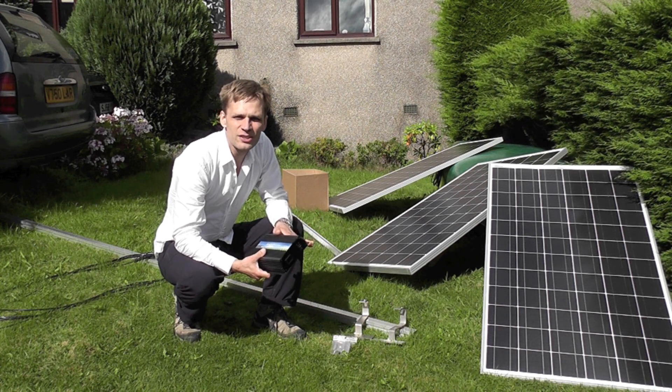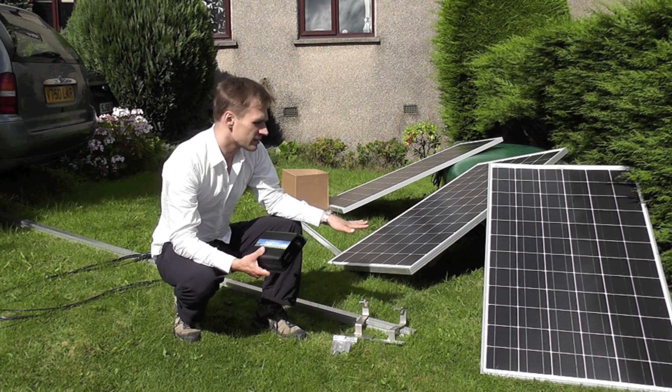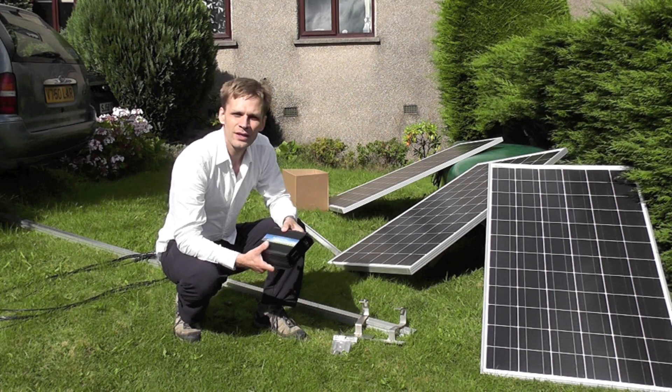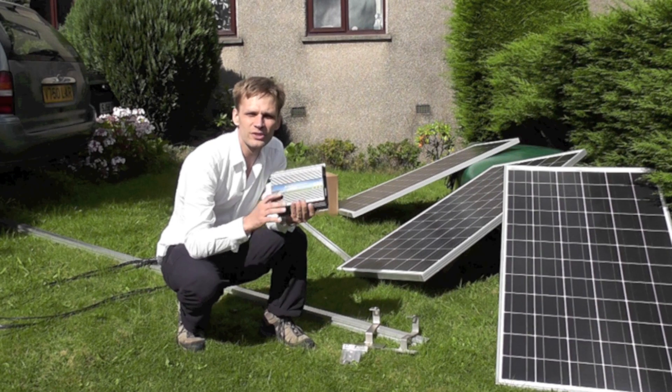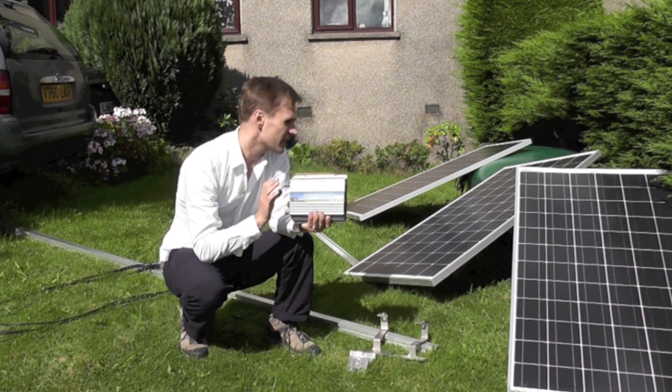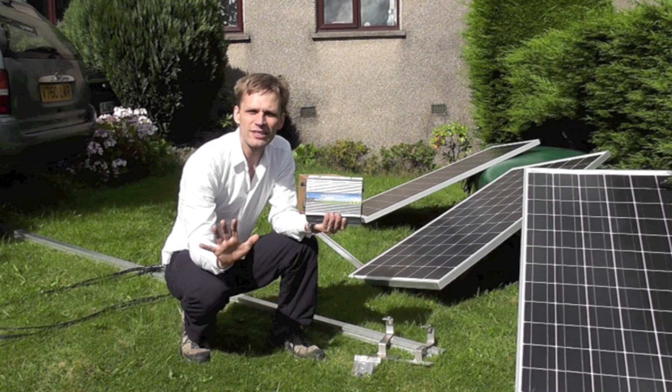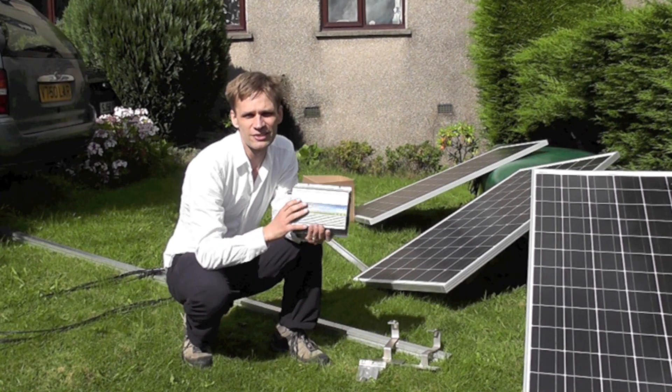We're going to put a grid tie system in place here. These panels here will go up on the roof and then we'll attach them to the grid by this grid tie inverter, which just plugs into a plug socket. And then the electricity from the panels will go directly into your grid, reducing your electricity bills.